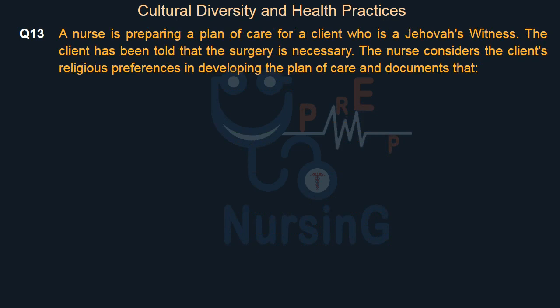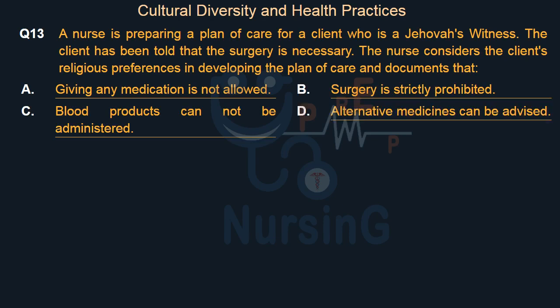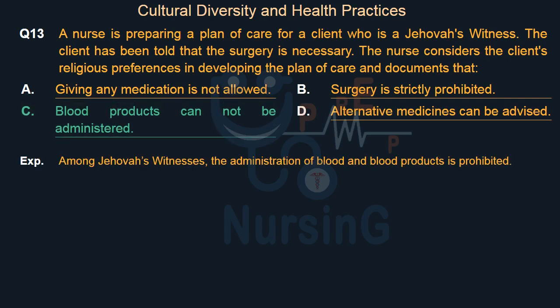A nurse is preparing a plan of care for a client who is a Jehovah's Witness scheduled for surgery. The nurse considers the client's religious preferences and documents which of the following: Option A: Giving any medication is not allowed. Option B: Surgery is strictly prohibited. Option C: Blood products cannot be administered. Option D: Alternative medicines can be advised. The right answer is Option C. Among Jehovah's Witnesses, the administration of blood and blood products is prohibited.